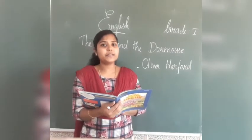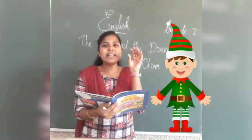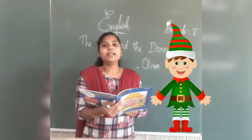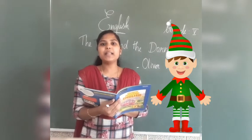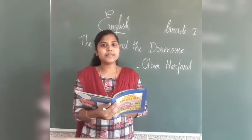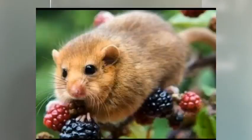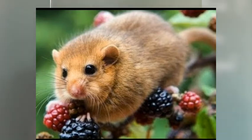Have you all seen an Elf? They are small, tiny people. They can fly like butterflies. They will work with Santa. What is meant by Dormouse? Dormouse is a kind of mouse — have you all seen mice? Dormouse is a kind of mouse; it has furry hair.